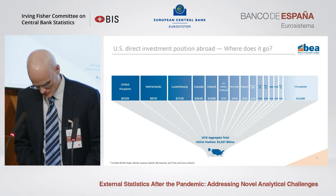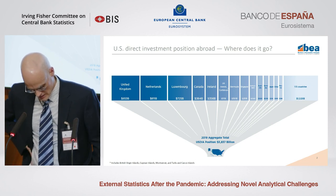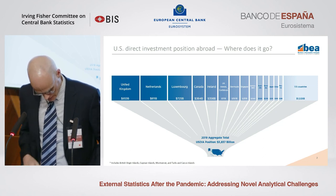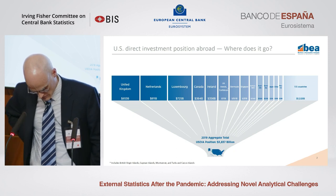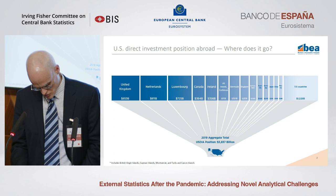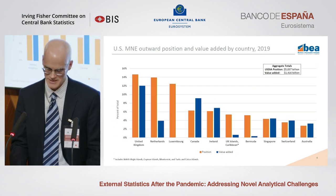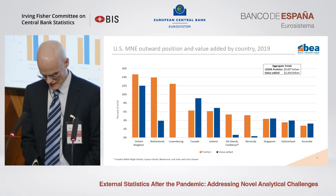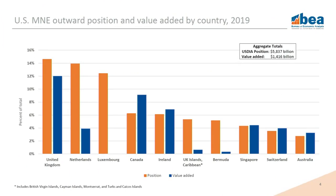From BEA's annual and benchmark surveys of U.S. direct investment abroad — covering the financial and operating data of U.S. multinationals — we know that the investment does not stay in many of the countries with the largest positions. This chart features the top 10 countries by how much of the position they account for (shown in orange) alongside those same countries in terms of value added (shown in blue). The value added of foreign affiliates is their contribution to the host country's GDP.